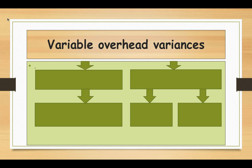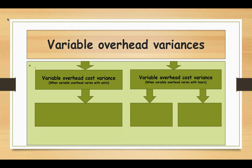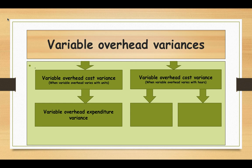Overhead costs are indirect costs. Variable overhead varies with the level of activity. Variable overhead costs may vary with the number of units — for example, packing materials. If the variable overhead cost varies with the number of units, the variable overhead cost variance will equal the variable overhead expenditure variance, because that is the only variance we need to calculate.